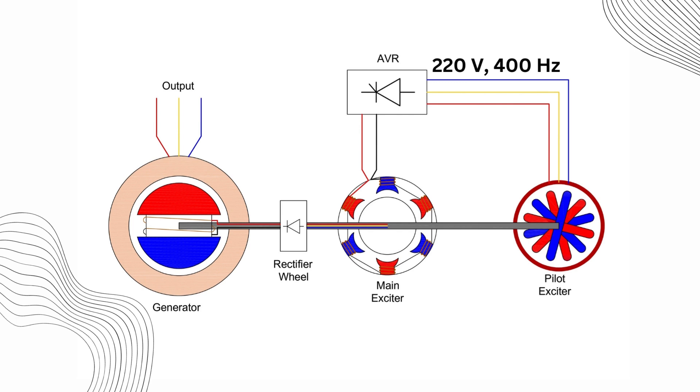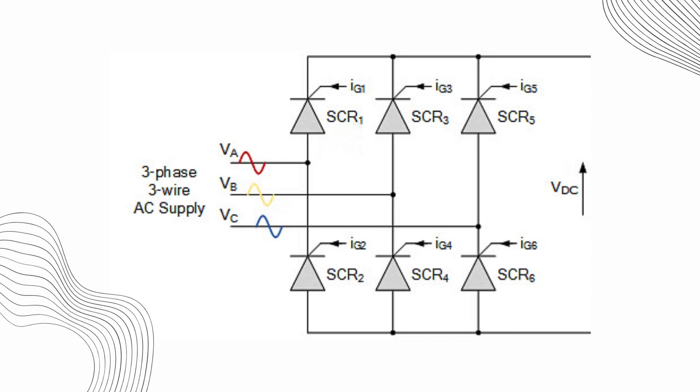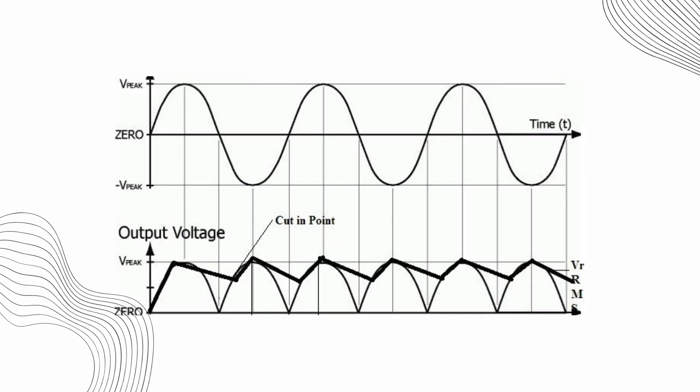But why is this frequency so high? Well, when the AC voltage is fed to the AVR and is rectified to DC by a three-phase fully controlled rectifier in the AVR, a higher input frequency ensures smoother DC output with minimal ripple content, which is crucial for efficient power delivery.